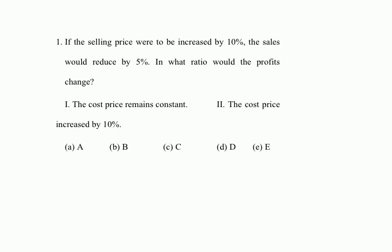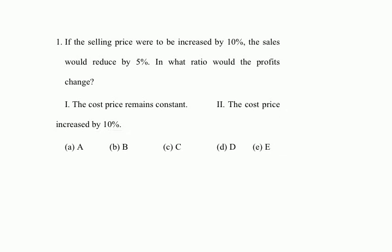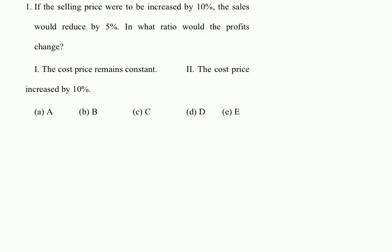If you've done these kinds of questions before, you might think that statement one says cost price is constant and statement two says cost price increases by ten percent. So you might initially think the answer is either D — meaning either statement independently is sufficient — or E, because statement one is really equivalent to statement two as far as profit and loss is concerned. However, let's look at this more closely.